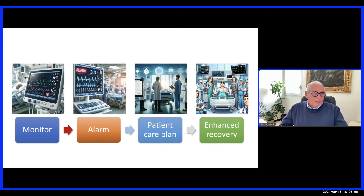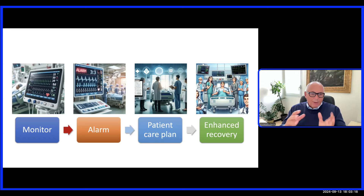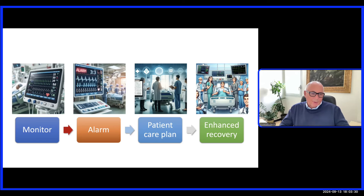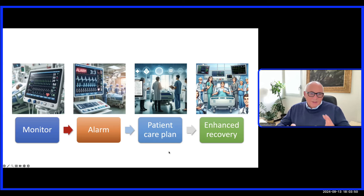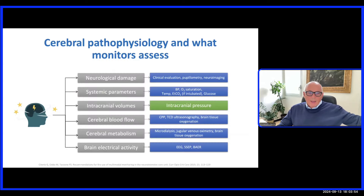We are going to discuss monitoring ICP. Every time we discuss measuring or monitoring something continuously in intensive care, we set alarms. When a parameter goes outside those alarms — higher or lower — we start thinking about reacting, adapting our patient care plan to reduce the burden of secondary insult and improve patient recovery. This is the scenario in which we think about intracranial pressure alongside other monitoring systems available in neurocritical care.